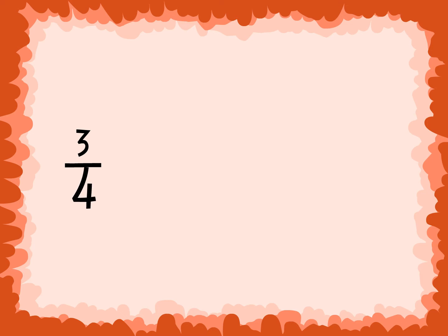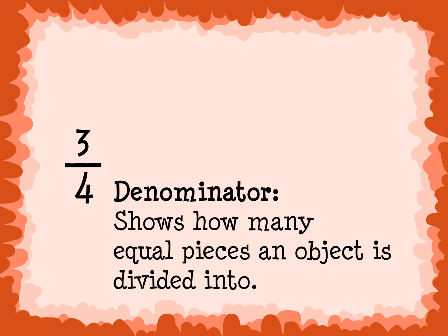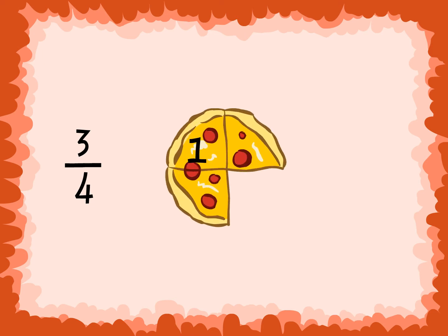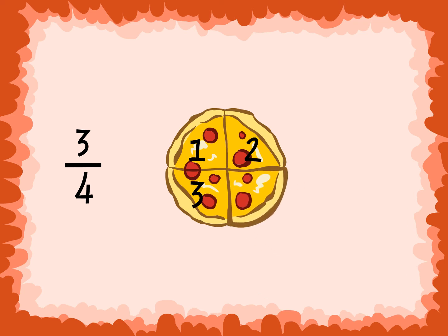The bottom number in a fraction is called the denominator. The denominator shows how many equal pieces an object is divided into. The 4 in 3 fourths of a pizza shows that the pizza was divided into 4 equal pieces.